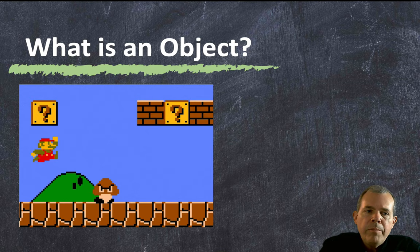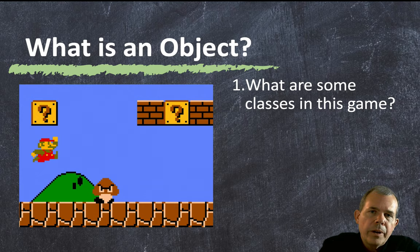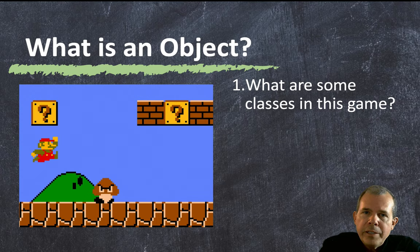Let's look at a real video game. If we look at Mario, we can ask: where do you see objects in this game? Which items on the screen are classes or objects? Obviously Mario is an object. The enemies are objects. How about the little squares with a question mark? How about the coins? And there'd be others too — the platform itself, and the background. Those are all things represented by objects in a computer program.